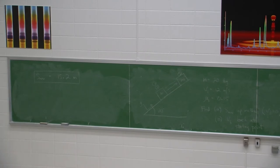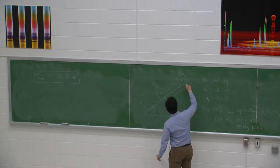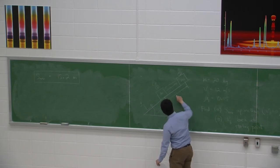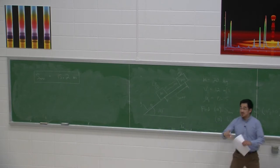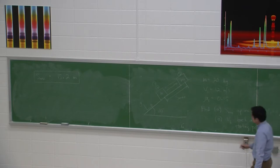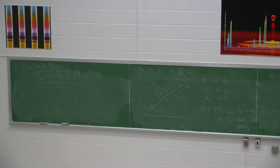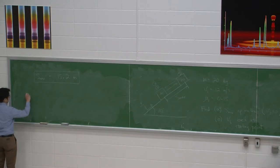When we say s_max, it is the displacement from point 1 — I should probably call it Δs_max to be clear. That is the distance along the incline from the starting position to where the mass stops.